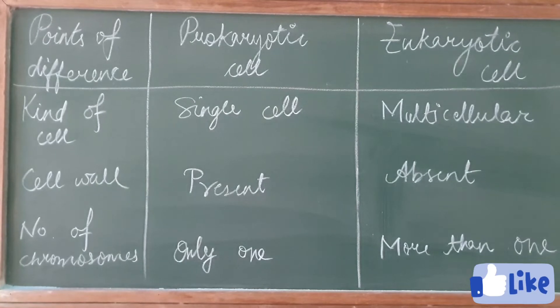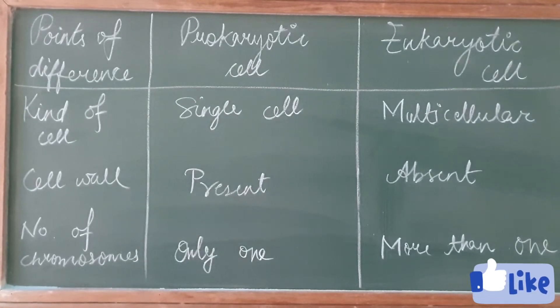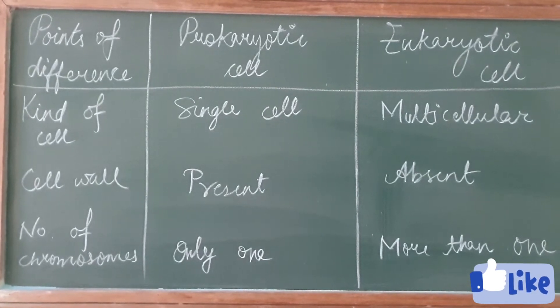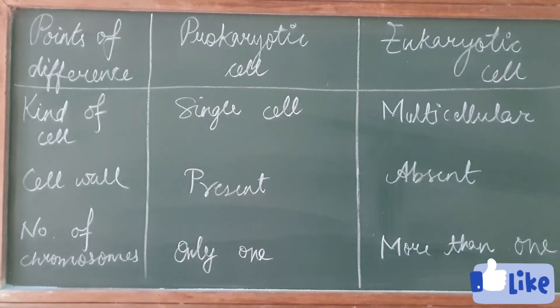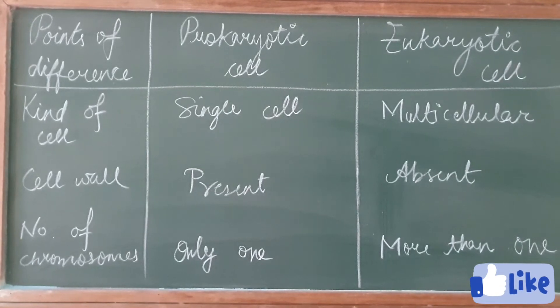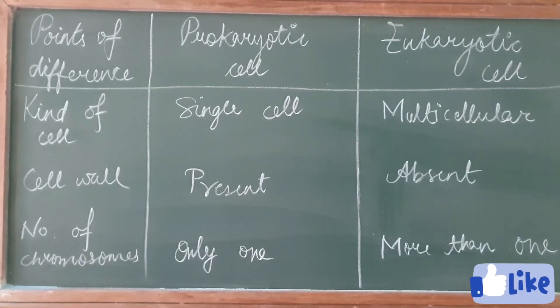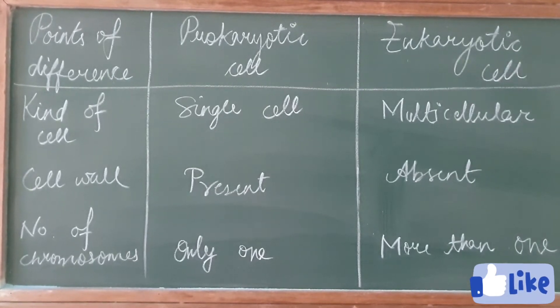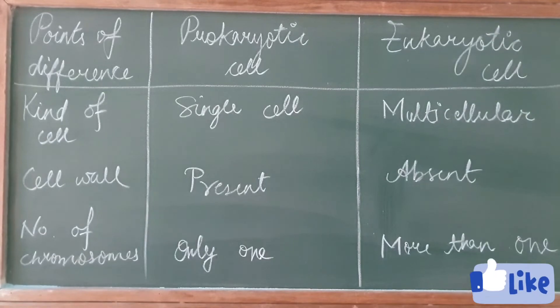The next point of difference is number of chromosomes. Only one chromosome is present in prokaryotic cell, and more than one chromosomes are present in eukaryotic cell.